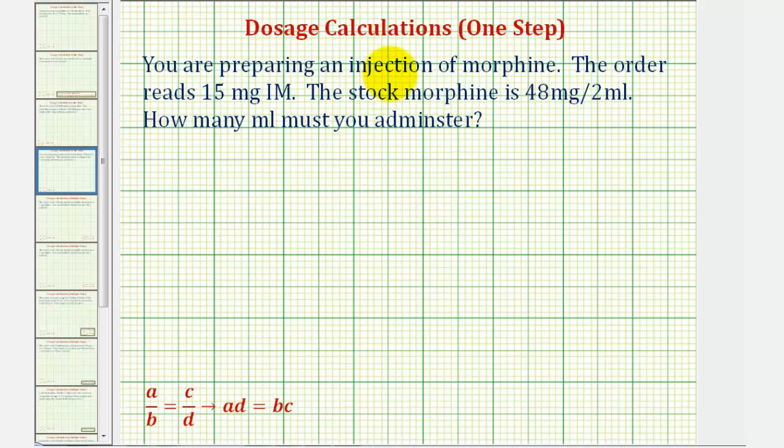We're going to solve this using a proportion where we set two rates equal to each other, cross-multiply, and solve for the unknown. Notice when we cross-multiply, A times D will equal B times C, as long as the units of A and C are the same, and the units of B and D are the same.